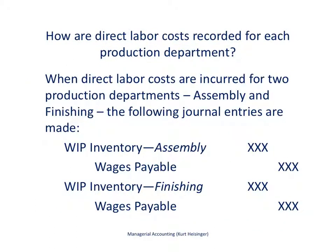Next we look at direct labor costs and how those are recorded on the books, and you'll see some similarities with direct materials. When our direct labor workforce works within a production department, the cost of that labor is added to work in process. We're adding those costs to work in process for the assembly department, and crediting wages payable.